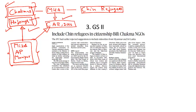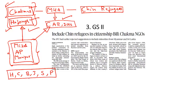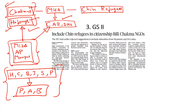In its present form, the Citizenship Amendment Bill provides citizenship status to refugees belonging to six religious communities: Hindus, Christians, Buddhists, Jains, Sikhs, and Parsis. Refugees from these six communities coming from Pakistan, Afghanistan, and Bangladesh will be granted citizenship as per the provisions of the Citizenship Amendment Bill of 2016.